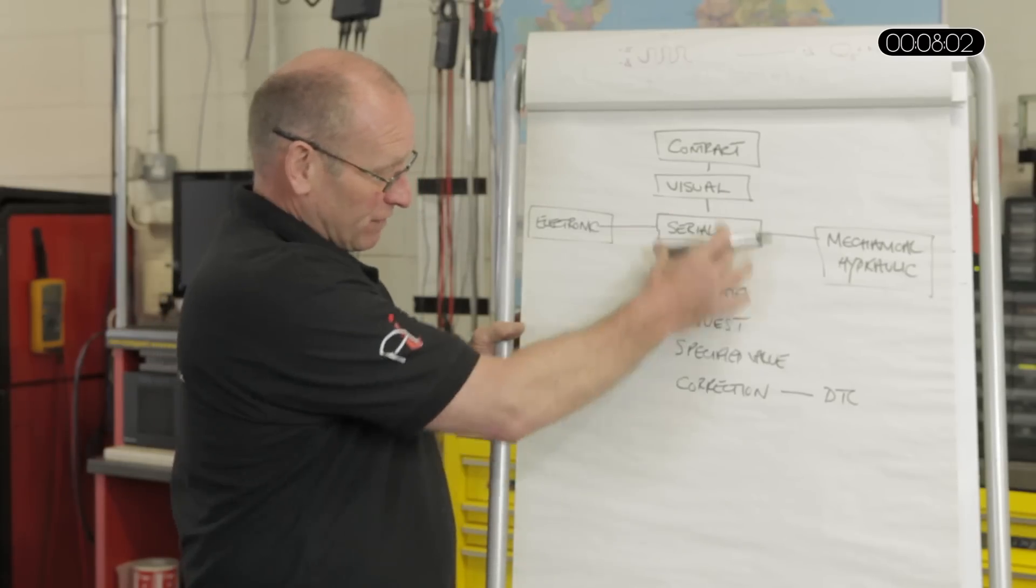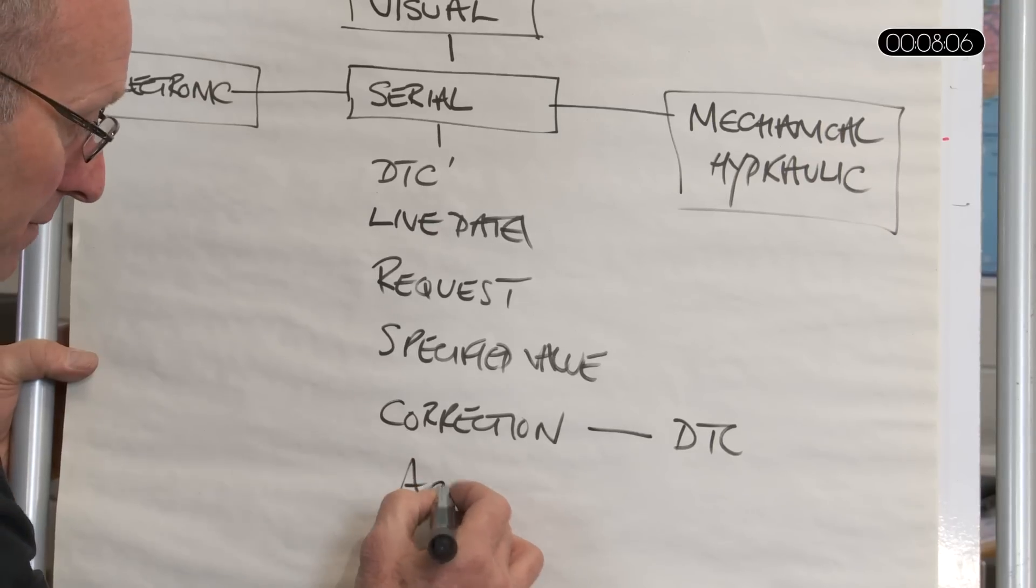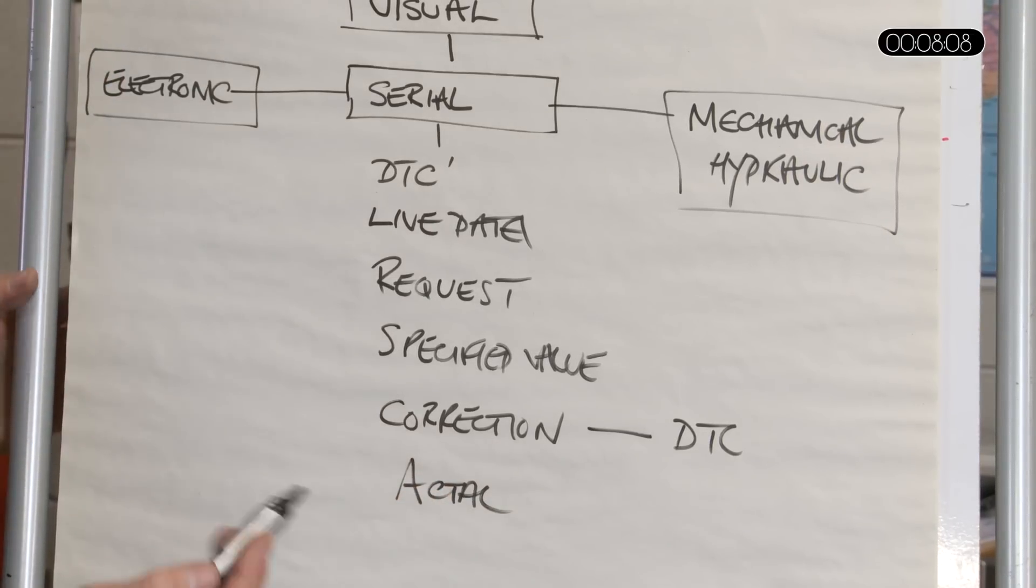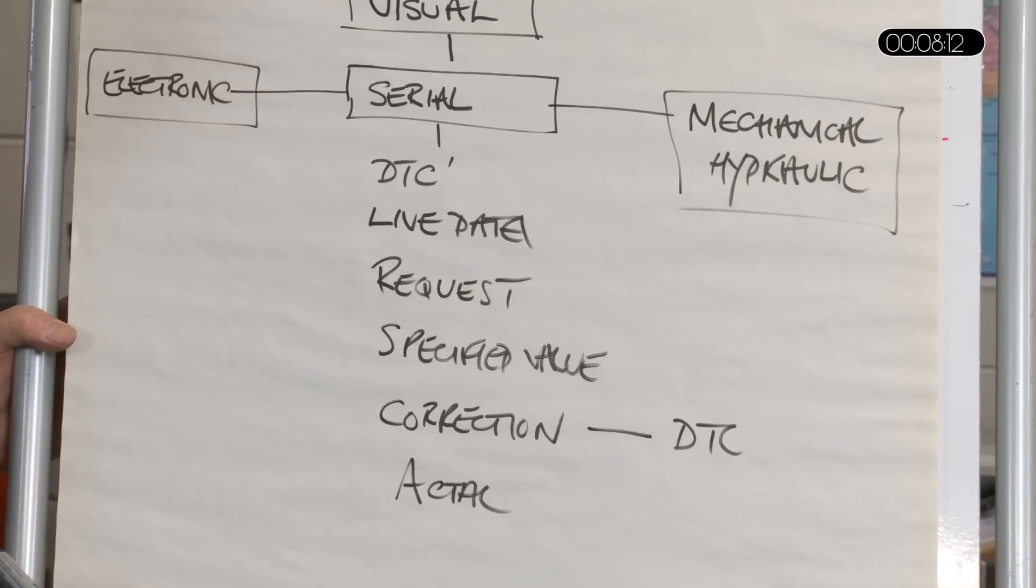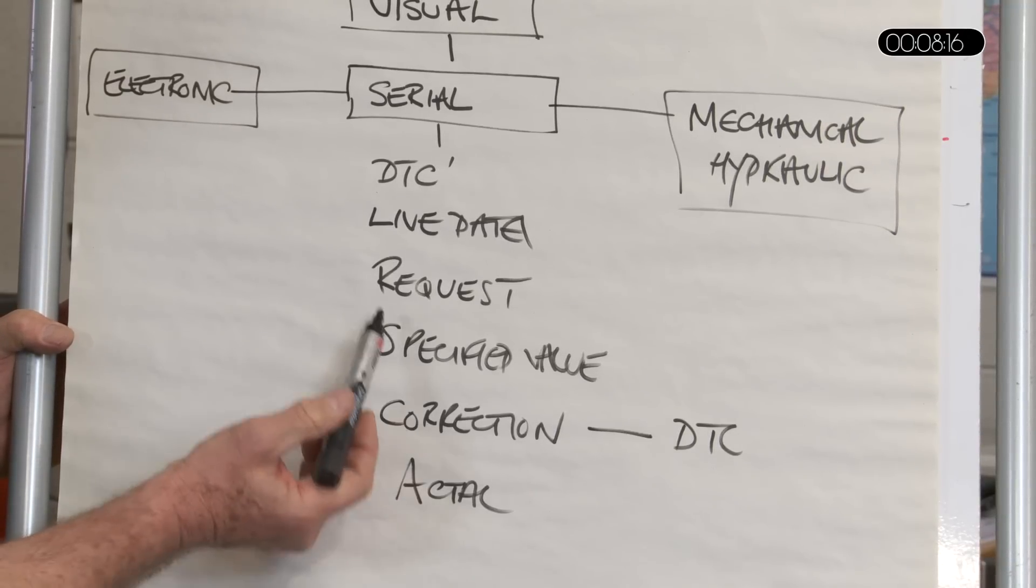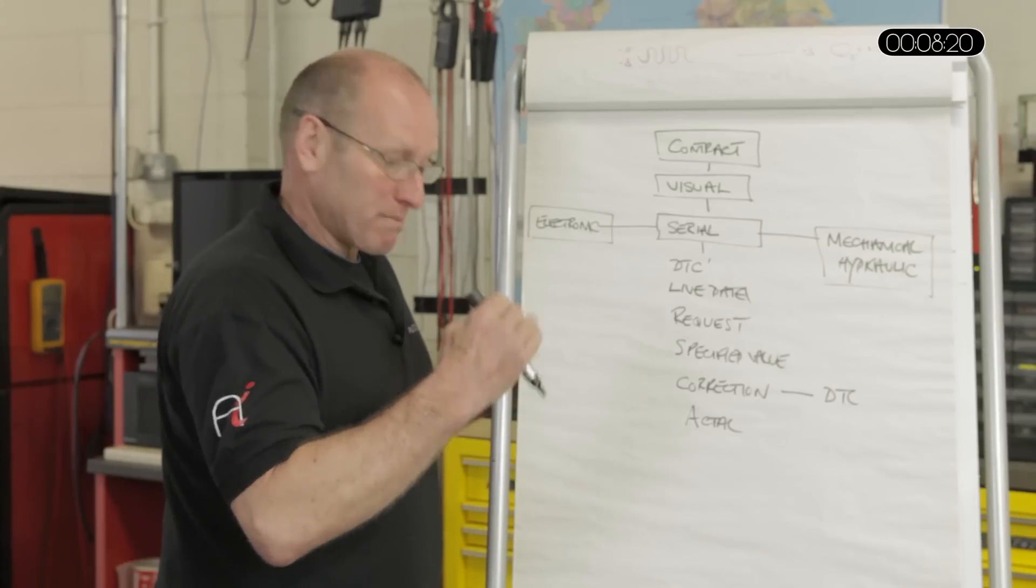And the final stage of serial evaluation, of course, is the actual value. And it obviously makes some sense that the request value should be met or be the same as actual with no correction. And that, of course, request specified actual should always agree. The value should be closely matched.